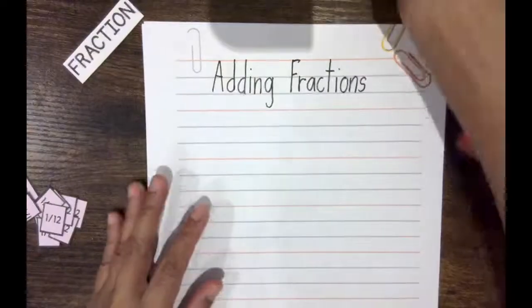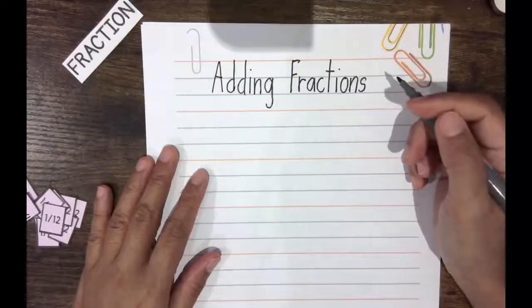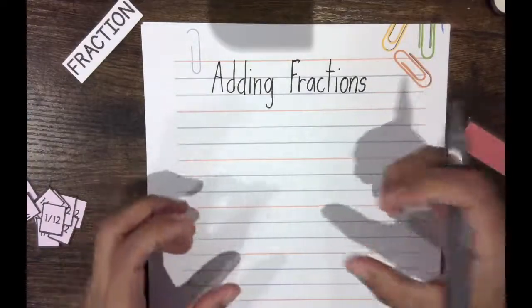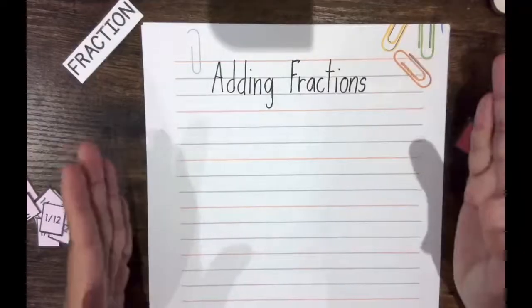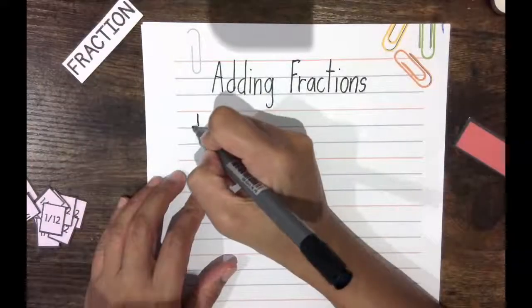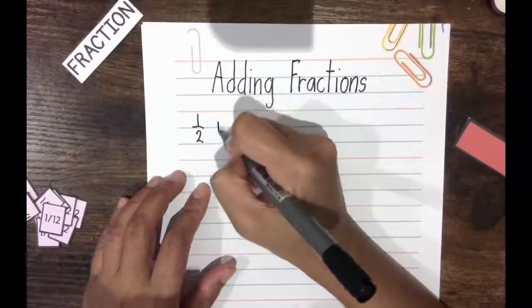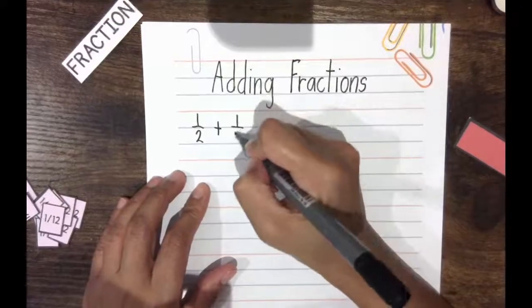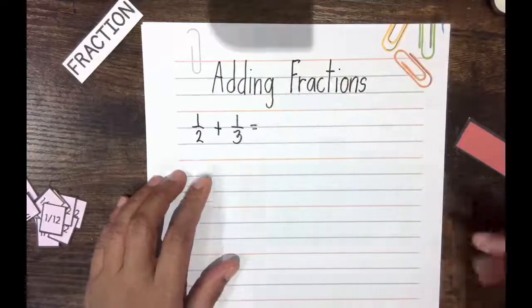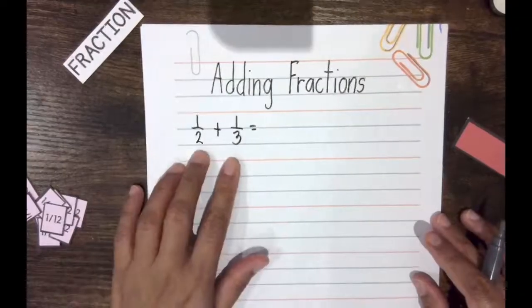So when you're adding fractions, there are steps. The first one would be to make the denominators the same if they have different denominators. For example, you have 1/2 + 1/3. You have to make their denominators the same so it's easier to add them.